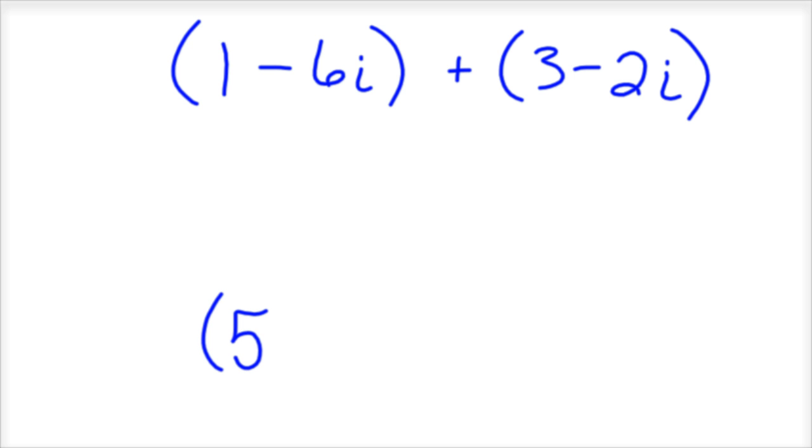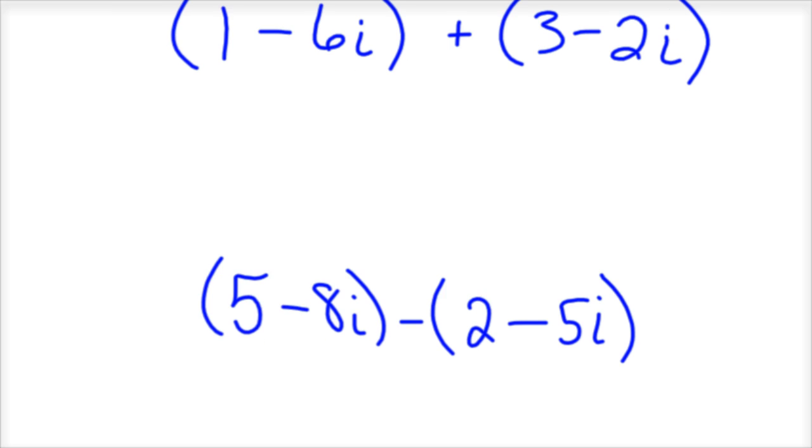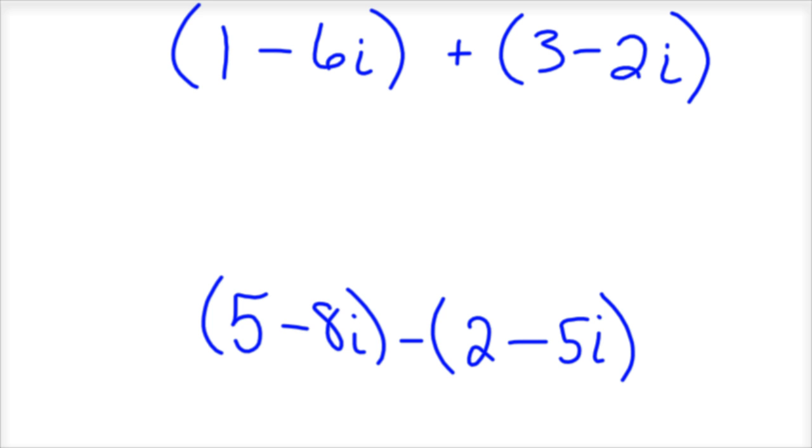So go ahead and try these two. So let's say you had 1 minus 6i plus 3 minus 2i. And let's say you had 5 minus 8i minus (2 minus 5i). So we had these two complex numbers where we add and subtract them. So we're going to hit stop and then try them and see if you get the right answer.